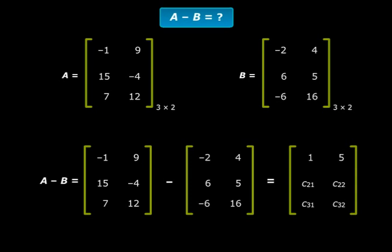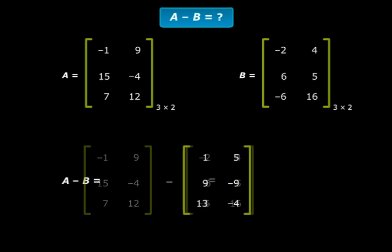Now all we need to do is a little bit of subtraction. So this is the final matrix. What are the elements? 1, 5, 9, minus 9, 13, and minus 4. And this is nothing but the matrix A minus B.